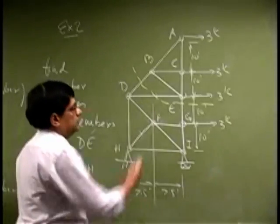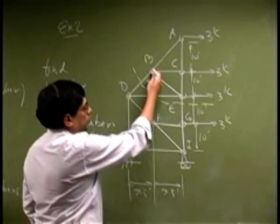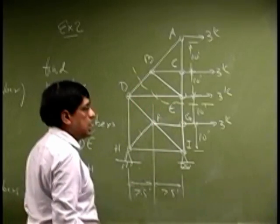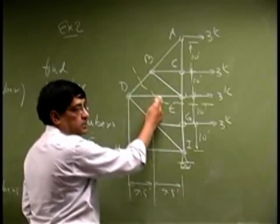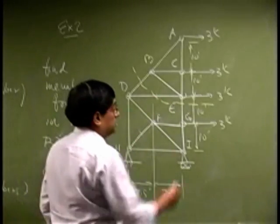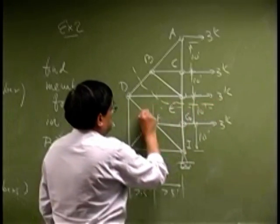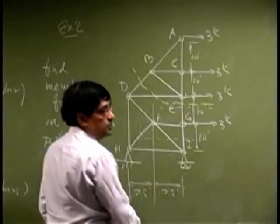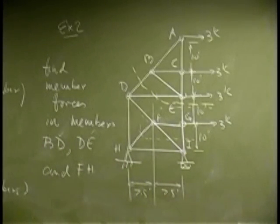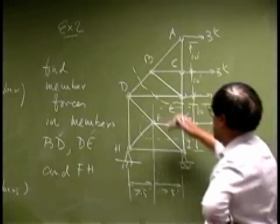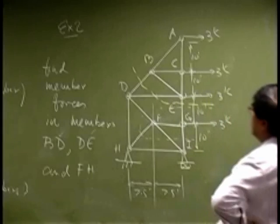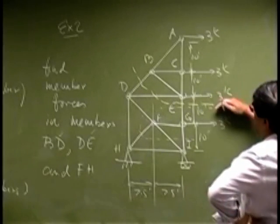First step is to find this force and this force, or we have to look at a section which goes like this. That means we will have the top part where we are going to remove this member, this member, and this member. That should allow us to find this force and this force. Then for the second part, we are going to have to look for a section which probably will go like this. So let us look at the first one.